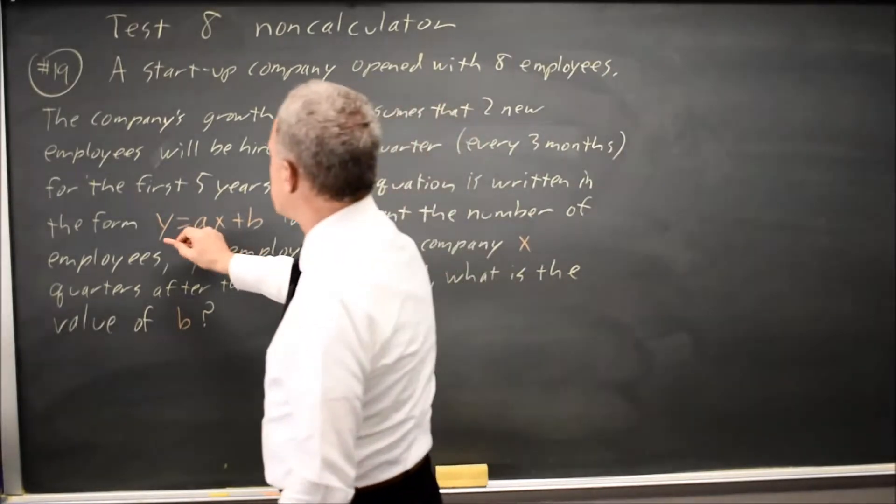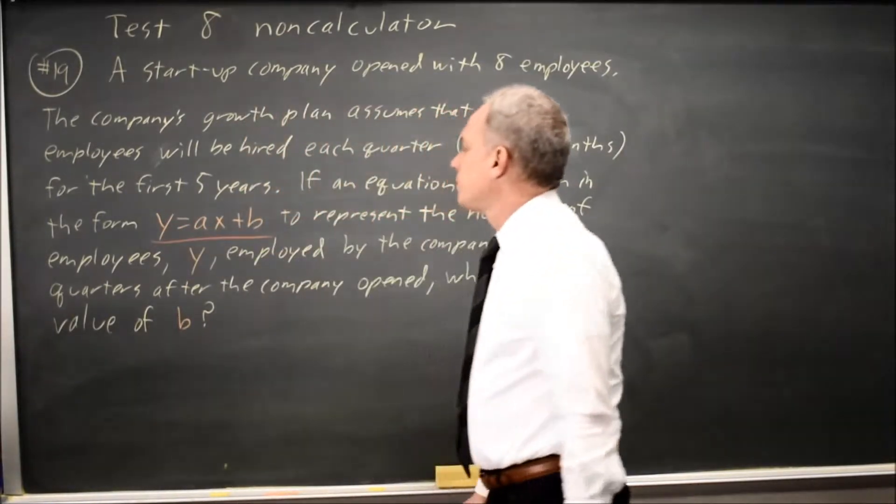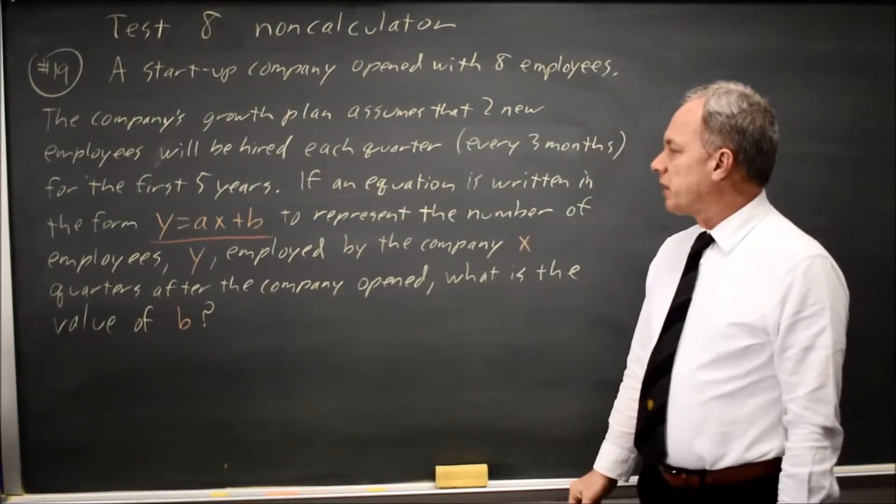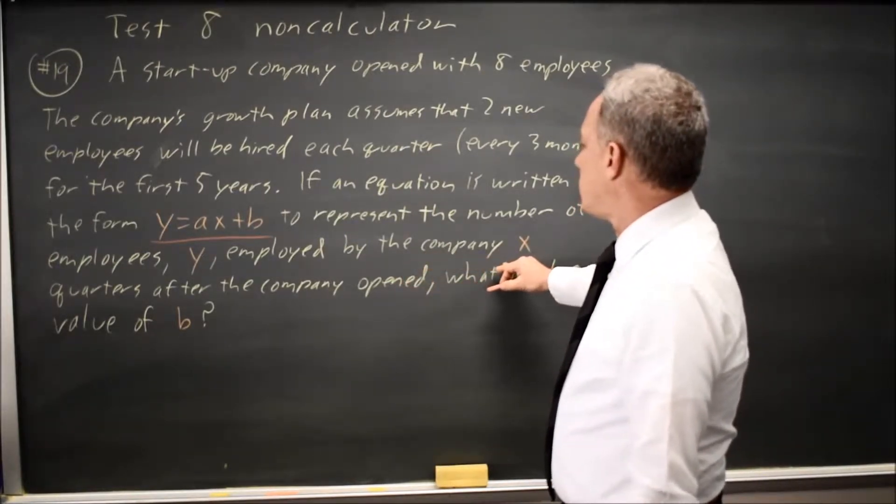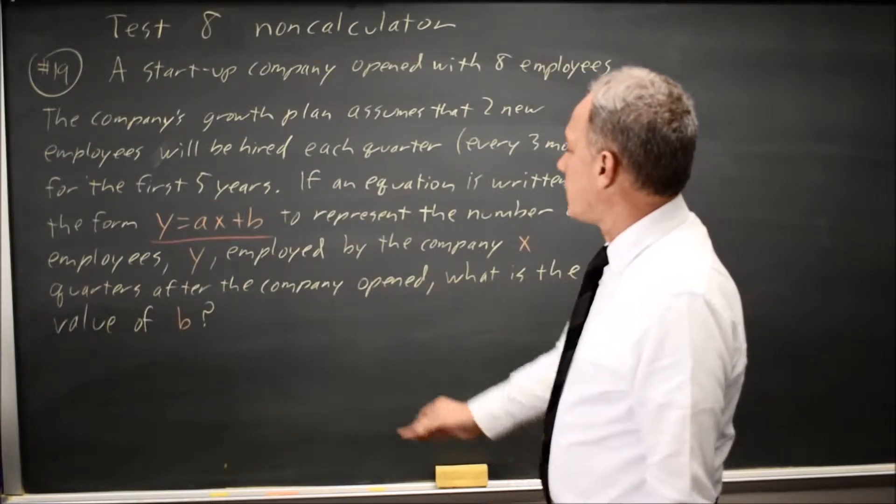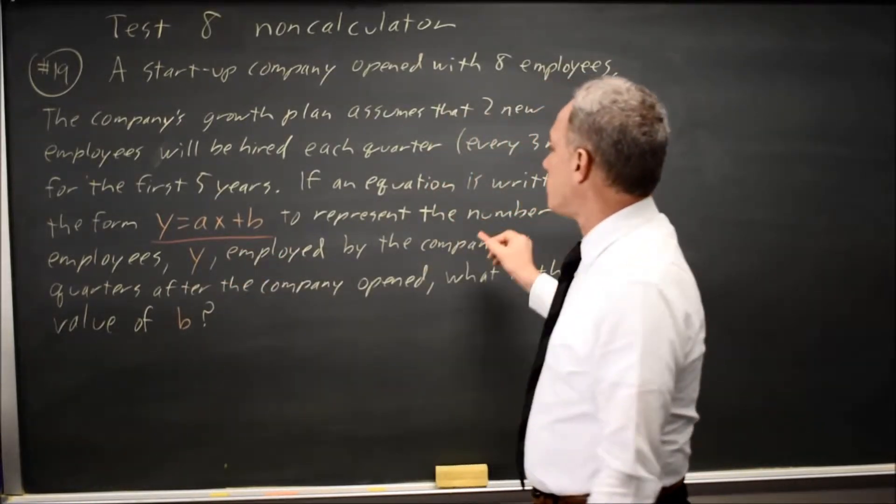giving the context for Y equals AX plus B, where X is the number of quarters after the company opened, and Y is the number of employees.